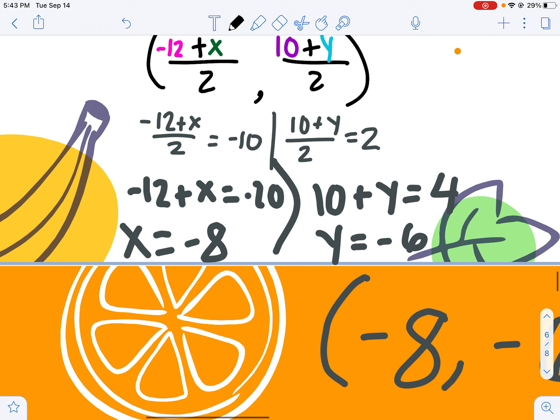Taking negative 12 plus my unknown x divided by 2 and setting it equal to negative 10 gets me negative 12 plus x equal to negative 20. Adding the 12 over, my x value needs to be negative 8.